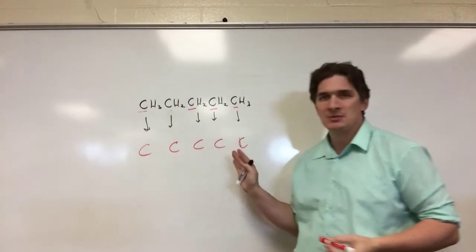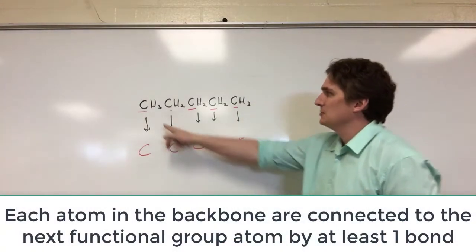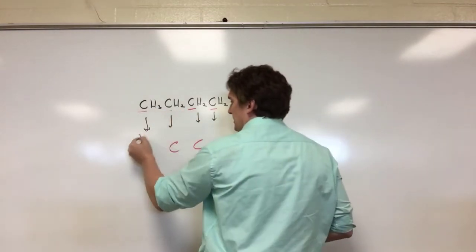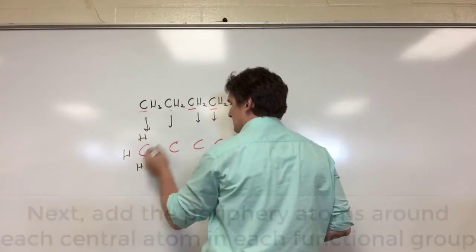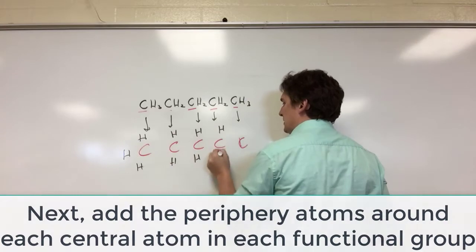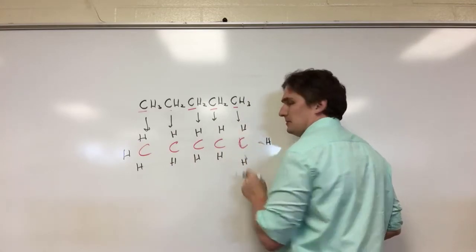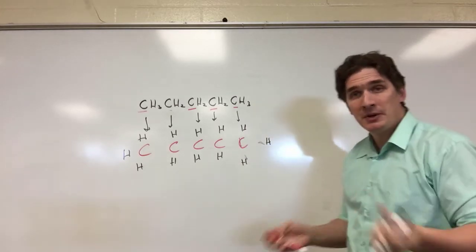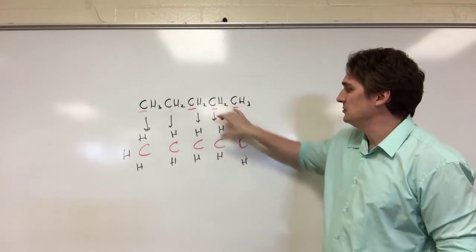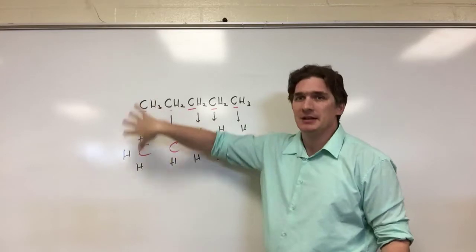All five of these carbons are connected with at least a single bond. Around each functional group, we have the list of surrounding atoms. We have three hydrogens around this one, two around this one, two around this one, two around this one, and three around this one. That's because we have a CH3 group with three hydrogens, CH2 groups with two hydrogens each, and a CH3 at the end.